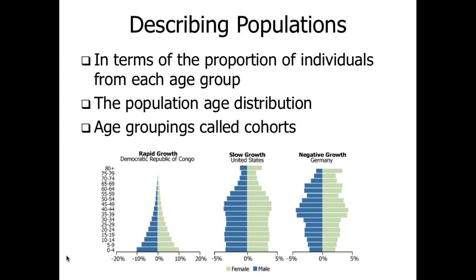Ecologists study five-year cohorts — people aged 0 to 4, 5 to 9, and so on — tracking how each birth cohort matriculates through society and predicting what is likely to happen. In rapid growth areas, generally referred to as third world countries or the first demographic transition, there is a very high birth rate, so relatively large numbers are in the lower age cohorts. But there is also a high death rate, leaving a small percentage of the population in the very advanced years, giving the pyramid a pointed, wide-base triangle shape.